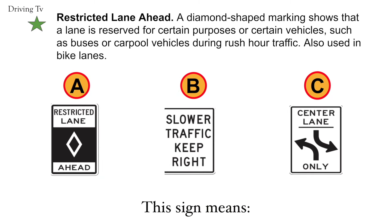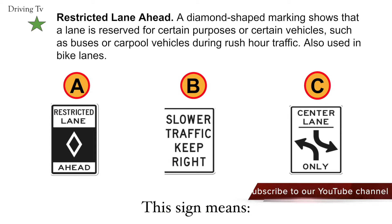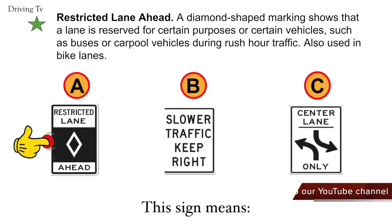Restricted lane ahead. A diamond-shaped marking shows that a lane is reserved for certain purposes or certain vehicles, such as buses or carpool vehicles during rush hour traffic, and is also used in bike lanes. Correct answer is A. Restricted lane ahead.